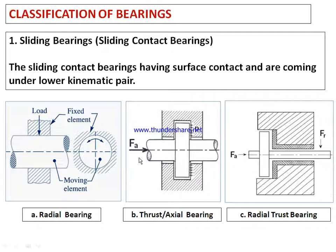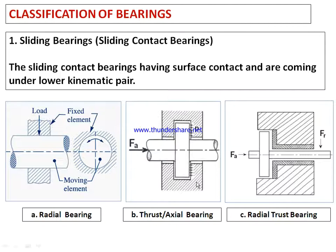The second type has axial load coming on the bearing, which is why it is called a thrust or axial bearing. In the third case, both axial and radial loads are present, with surface or area contact between the rotating shaft and the bearing member. This is the bearing element, and this is the fixed element.